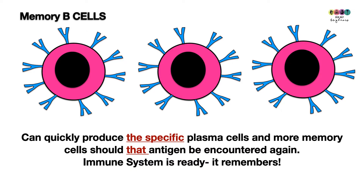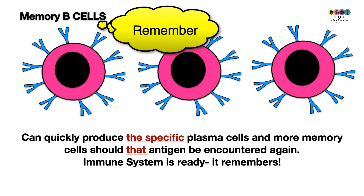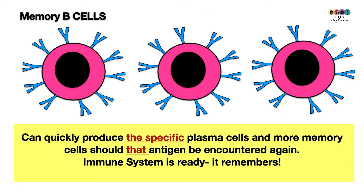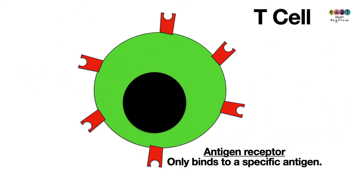As well as plasma cells, memory B cells are also produced — and the hint is in their name: they remember. Memory B cells remember that specific antigen, and if they ever encounter it again they can very quickly produce the plasma cells that make that specific antibody, and also make more memory B cells. Essentially they are your immune system's way of remembering an antigen and dealing with it again quickly.